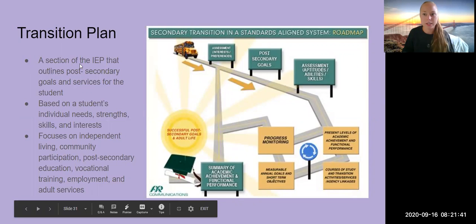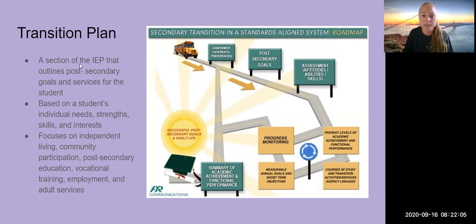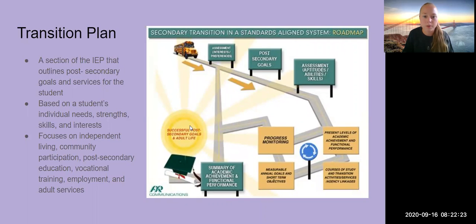You've probably heard us talk about a transition plan. A transition plan is a section of the IEP that outlines post-secondary goals and services for the student. They should be based on the student's individual needs, strengths, skills, and interests. They should focus on independent living, community participation, post-secondary education, vocational training, employment, and adult services. You can see this roadmap that guides the transition plan — first, the assessment where we look at the student's interests, preferences, and strengths — which should guide your student's IEP and put them on the road for success in their post-secondary life.